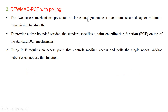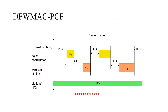The third mechanism addresses the fact that the previous two access methods do not guarantee a maximum access delay or minimum transmission bandwidth. To provide time-bounded service, the standard specifies a point coordination function (PCF) on top of the standard DCF mechanisms. Using PCF requires an access point that controls medium access and polls the individual nodes. Ad hoc networks cannot use this function.